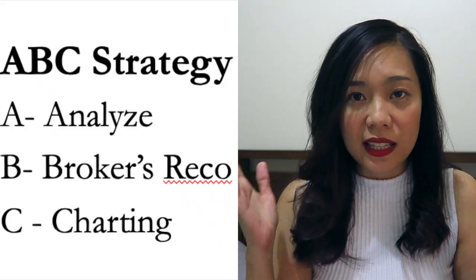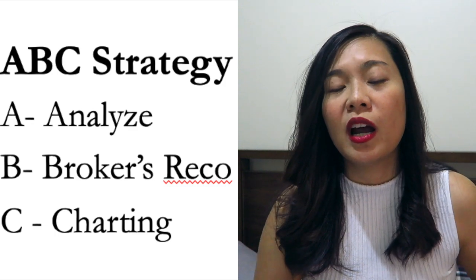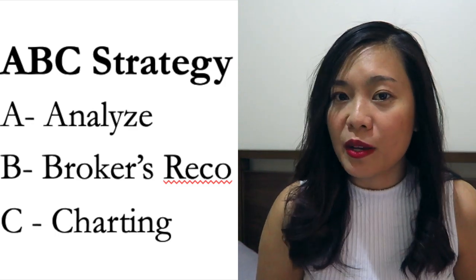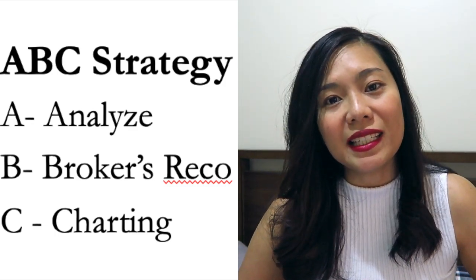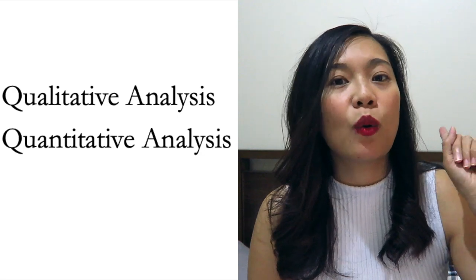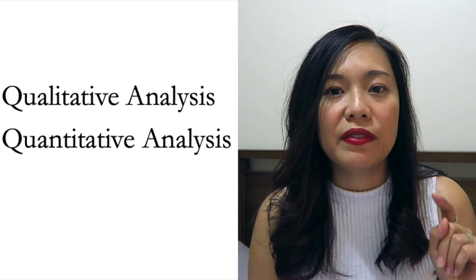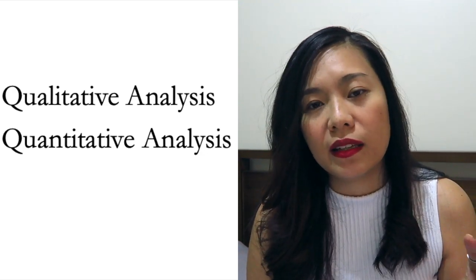A is for Analyze, B is for Broker's Recommendation, and C is for Charting. From now on, we will be following that structure so that you can clean up costs in investing. It takes practice to get the hang of it. So first we start with A — Analyze. You have to consider two things: qualitative and quantitative analysis.